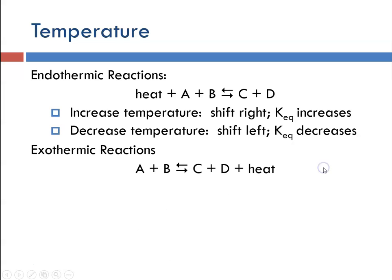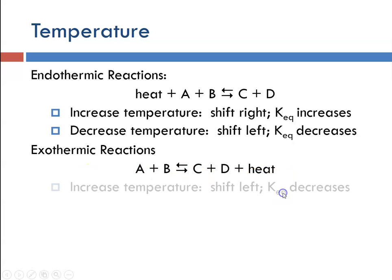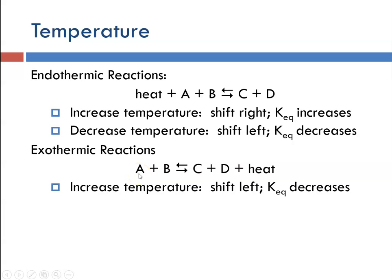For an exothermic reaction, heat is written on the product side because exothermic reactions produce heat. An increase in temperature is going to shift the equilibrium toward the left, meaning reactants will be increasing. As a result, Keq would decrease, remembering reactants are in the denominator — if the denominator is getting larger, the value goes down.